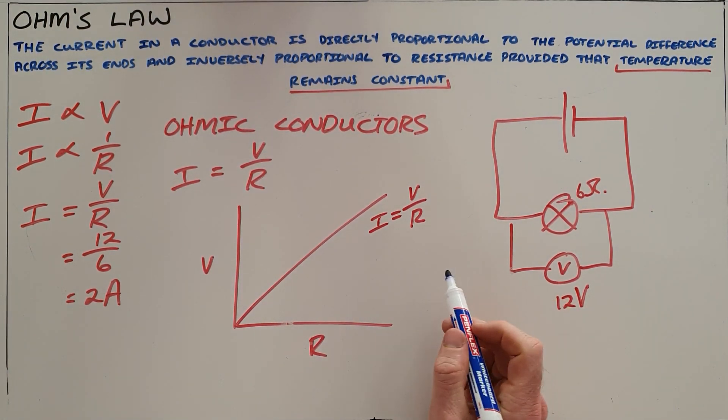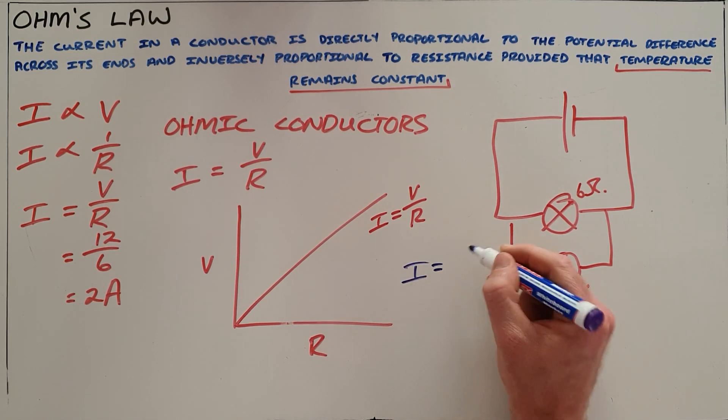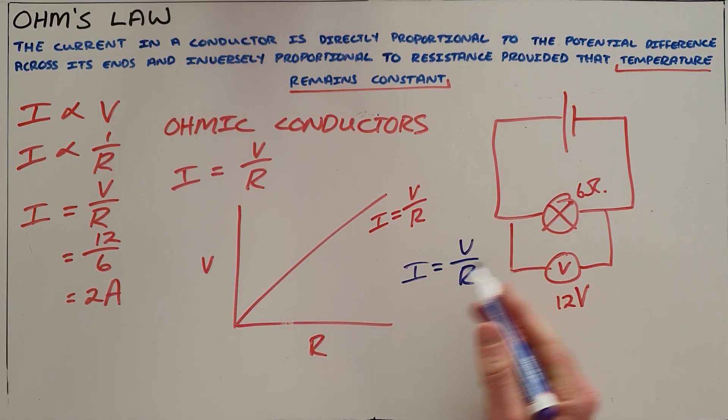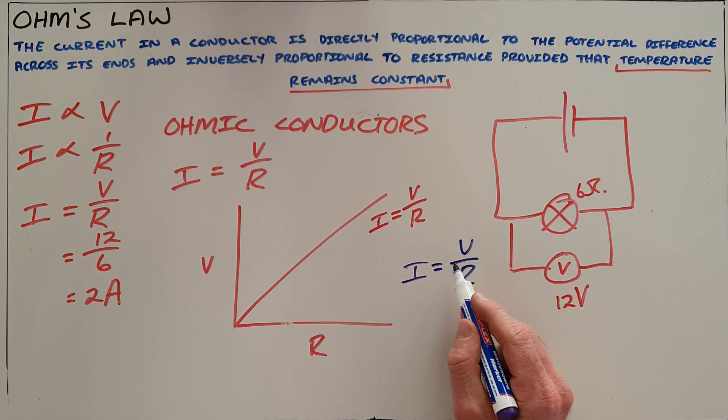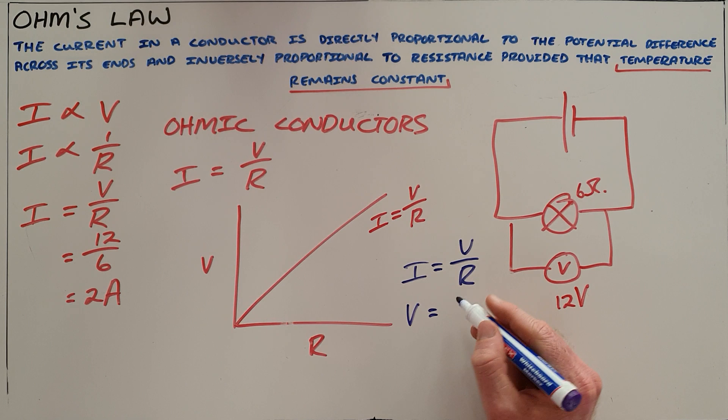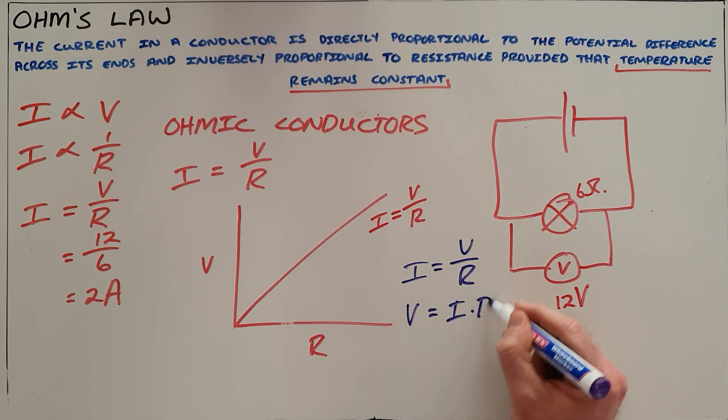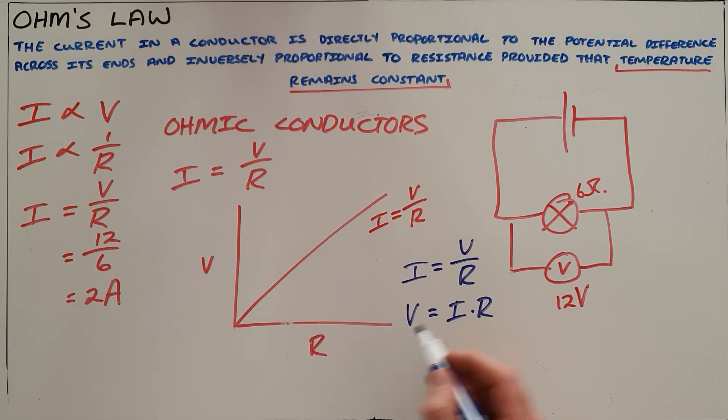This formula now obviously has three variables, and so it allows us to rearrange the formula to solve for various unknowns. If we know voltage and resistance through a conductor, then we can calculate the current. If we know the current passing through a conductor and that conductor's resistance, we can then calculate the voltage over that conductor. And if we know the voltage over a conductor and we know the current passing through it, we can calculate the resistance through that conductor.